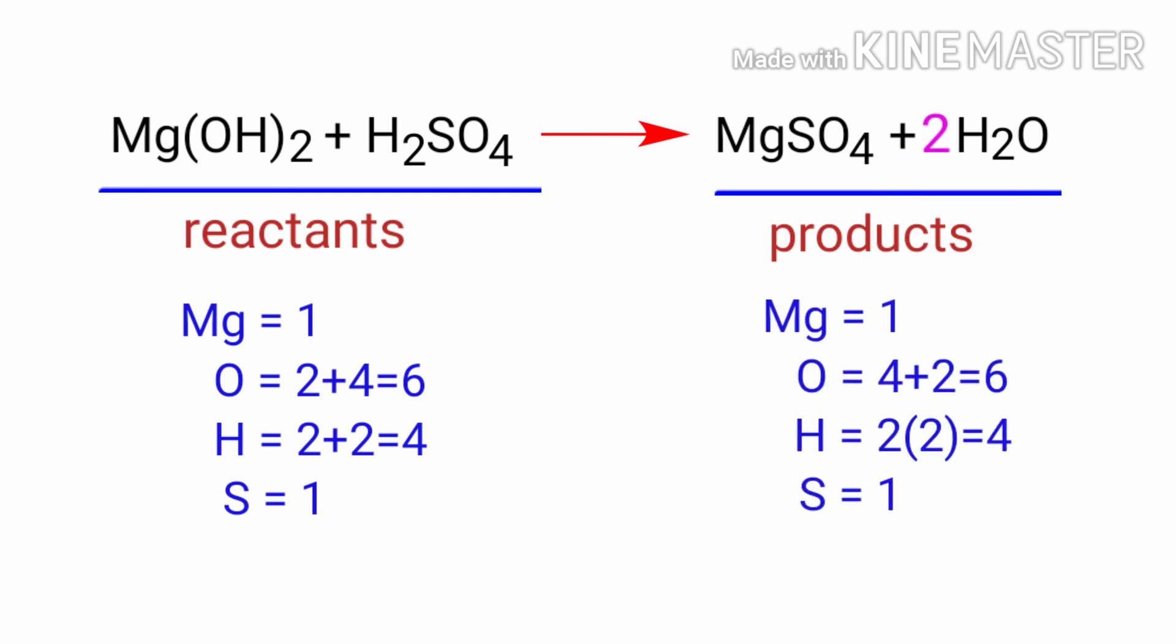The equation is now balanced. There are 1 magnesium atom, 6 oxygen atoms, 4 hydrogen atoms, and 1 sulphur atom on both sides.